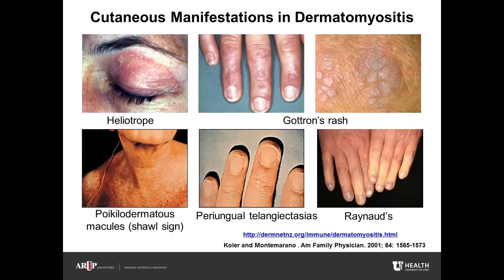Classic dermatomyositis rash can be quite subtle. However, heliotrope rash is typical and consists of purplish discoloration of the eyelids often associated with periorbital edema. Patients may also present with Gottron's papules, which are red or violet papules occurring over the knuckles, the interphalangeal joints, and other extensor surfaces. A macular erythematous rash may affect the face, neck, and anterior chest defined as the V sign, or upper back, the shawl sign, and the extensor surfaces of elbows, knuckles, knees, or toes. The nail beds may have dilated capillary loops with periungual hyperemia. Raynaud's phenomenon may also be observed in patients with dermatomyositis.